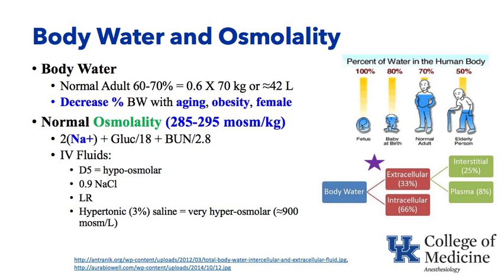IV fluids: D5 is considered hypoosmolar, while hypertonic saline (3% saline) is very hyperosmolar at about 900 milliosmoles per liter. Normal saline and lactated Ringer's are considered essentially isoosmolar. Body water is distributed between the extracellular space — about one-third — and the intracellular space — about two-thirds. The extracellular space can be divided into interstitial, about 25 percent, and plasma, about 8 percent of total body water. These body compartments help determine where a fluid will go when administered to a patient.